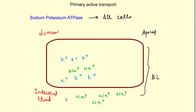Active transport means the transport of one or more substances against their concentration gradient. So sodium-potassium ATPase will transport both sodium and potassium ions against their concentration gradient. Sodium will be transported from inside of the cell to outside, because outside it is in higher concentration.